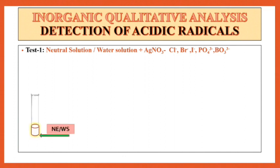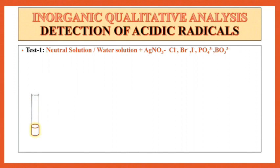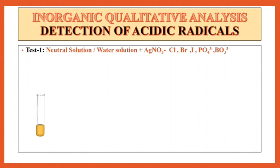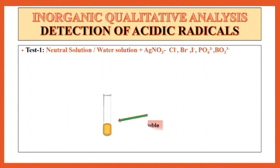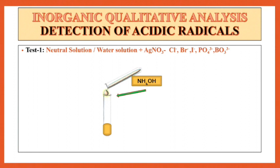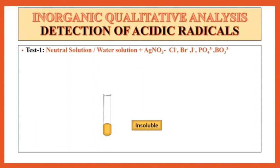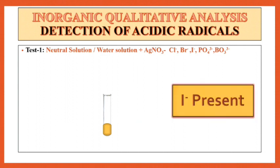Next observation for the addition of HNO3 solution to the neutral extract or water solution: a yellow PPT is observed. To this yellow PPT, add dilute HNO3 solution drop wise. Shake it well — it is insoluble. To the same solution, add NH4OH solution drop wise. It is insoluble again in NH4OH solution. So I⁻ is present.